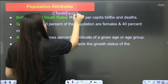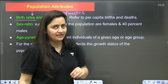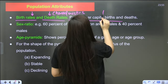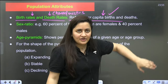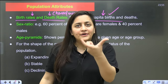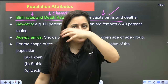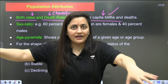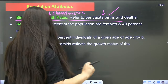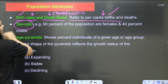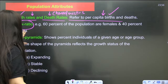When talking about the population, we discuss population attributes — also known as population characteristics. First is birth rate and death rate. As per NCERT, birth rate refers to per capita birth rate and death rate refers to per capita death. Per capita birth means total births divided by total number of individuals. Then comes sex ratio — as per NCERT, 60% females and 40% males.